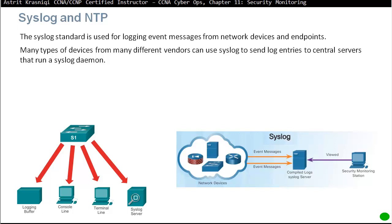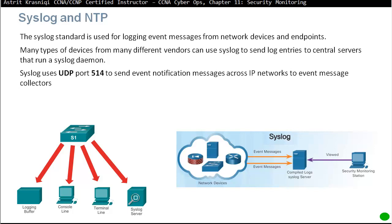Many devices from different vendors can use syslog to send log entries to a central server running a syslog daemon — for example, Cisco or other vendor devices sending syslog messages to the syslog server. From a security monitoring station, we can view those logs. Syslog is a best-effort delivery protocol and works on port 514 to send event notification messages across IP networks to event message collectors, which is typically a server.